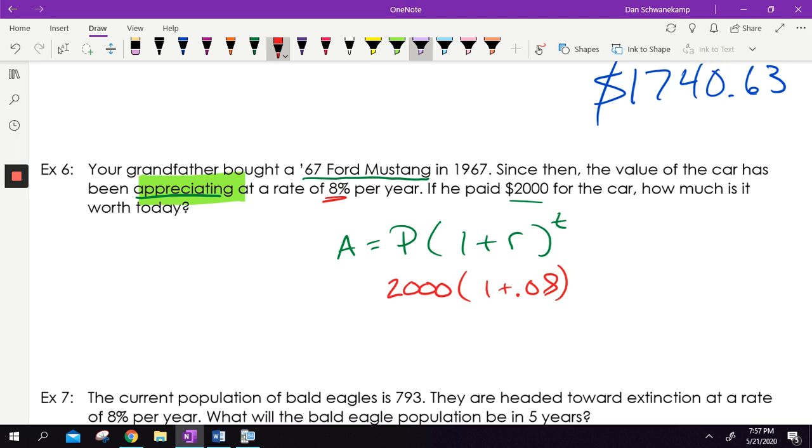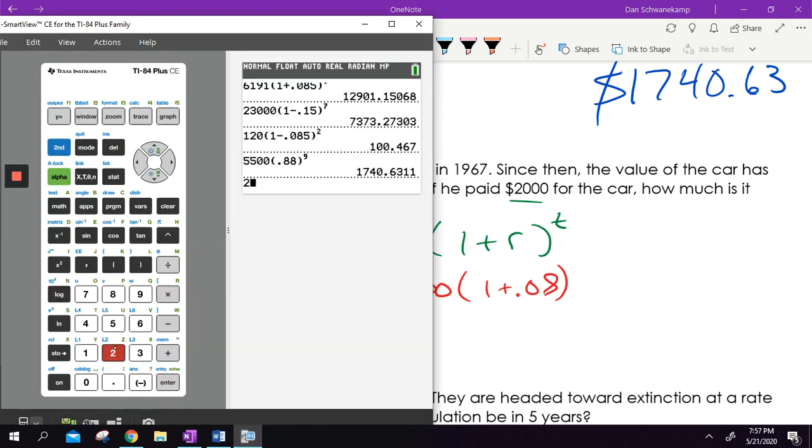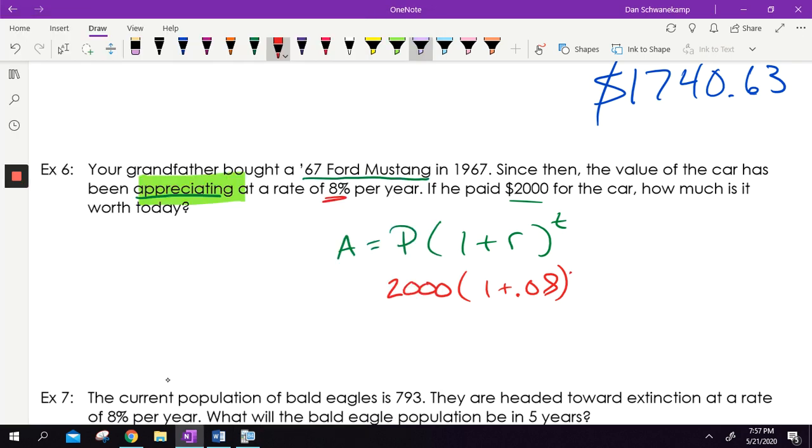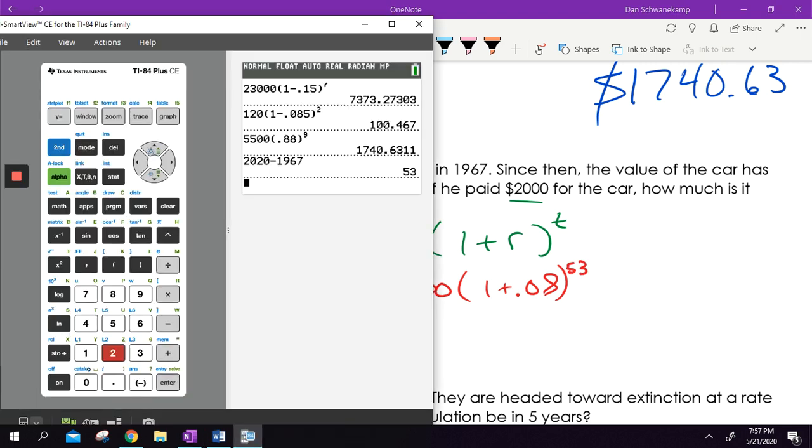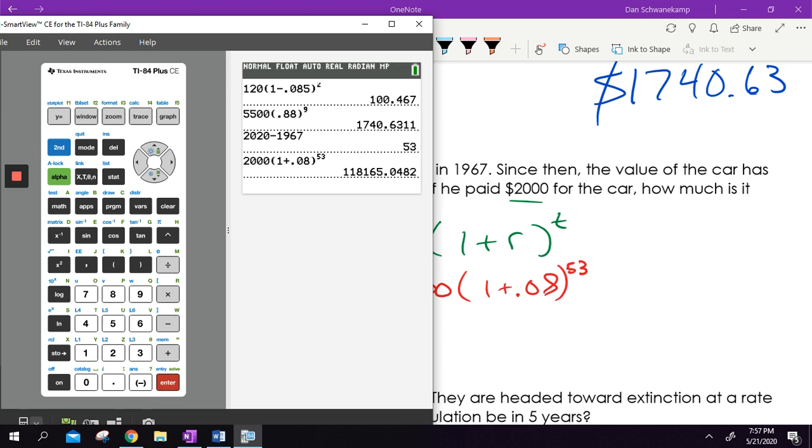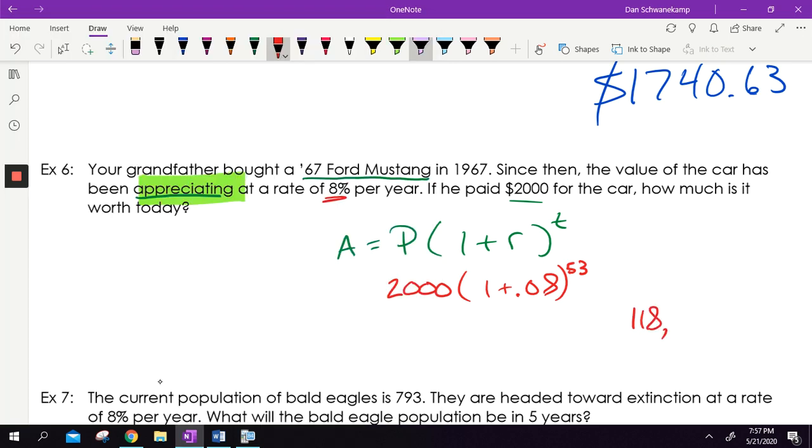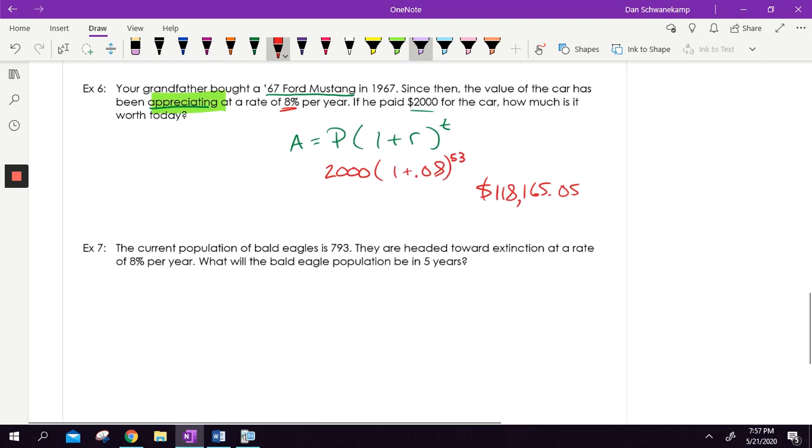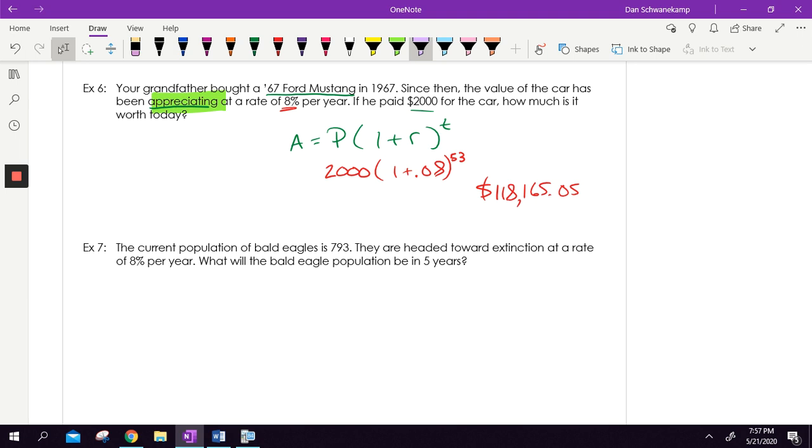So that is my formula. My P is $2,000. Started off with $2,000. One plus my rate is 0.08 because it's 8% per year. My time is going to be 1967, 2020 minus 1967. It's 53 years. So my time is 53 years. So that $2,000 car when he bought it, not very expensive when he bought it. By now, 53 years later, that car is going to be worth, I want to have that car, $118,165.05. Definitely the price of that car is going up, but it's probably pretty realistic. I bet you can buy a Ford Mustang in the $120,000 range if it's the right kind of car in the right kind of condition.